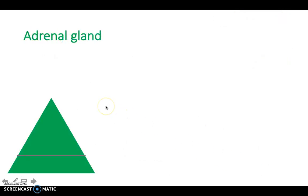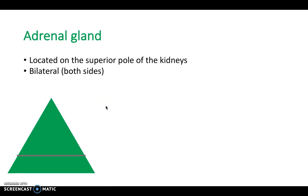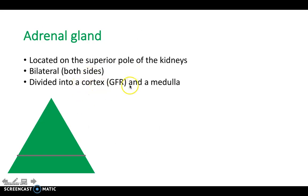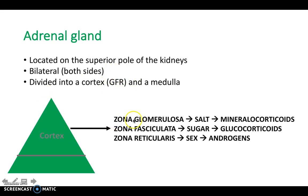Next we have the adrenal glands — these are the glands that sit on top of your kidneys. They're bilateral, occurring on both sides of the body, on top of both kidneys, and they're divided into a cortex and a medulla. An easy way to think about this is the cortex is divided into GFR: glomerulosa, fasciculata, and reticularis.